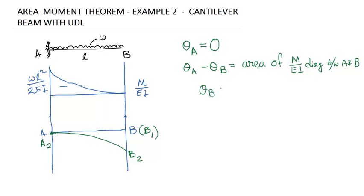So now theta B equals to zero minus what is the area. The height is wL squared by 2EI. This type of shape has an area of one-third base into height: minus one-third times L times wL squared by 2EI. So we got a positive value of wL cubed by 6EI, which means the slope is clockwise.